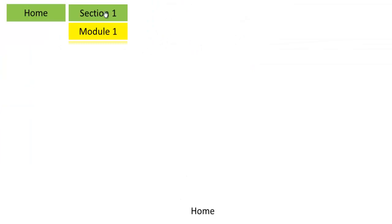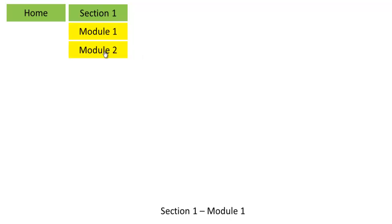Let me test the slideshow. From home, I go to Section 1, click Module 1, and it takes me there. I go to Module 2, and that works. Clicking Module 1 takes me back to Module 1. Clicking Home takes me back to the Home slide. But there's an issue — when I go back to Home, the drop-down sub-modules still appear. We need a workaround so they become invisible when navigating away.